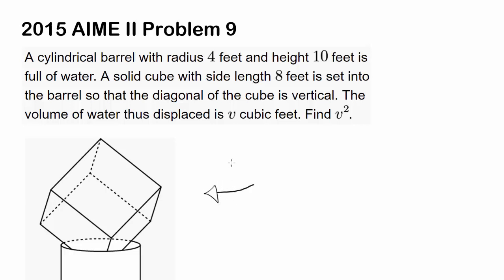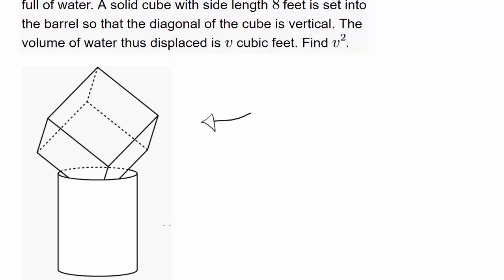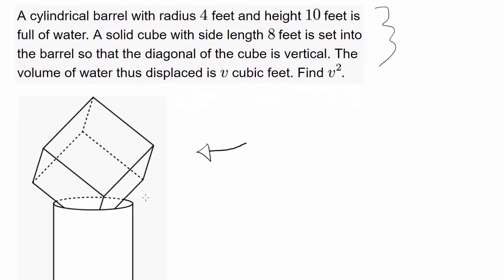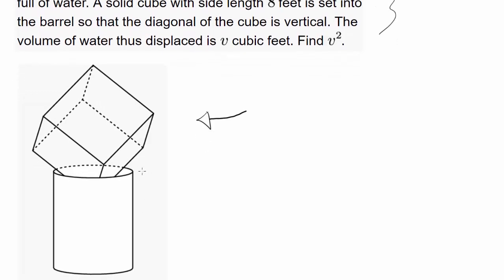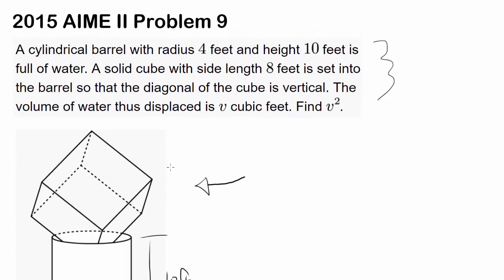We have a very interesting diagram given to us — a cube that's barely inside a cylinder, pressed in as much as possible. The problem states: a cylindrical barrel with radius 4 feet and height 10 feet. The height of 10 feet seems more than enough for the cube to fit, so I believe the height is extraneous information and we probably won't use it.